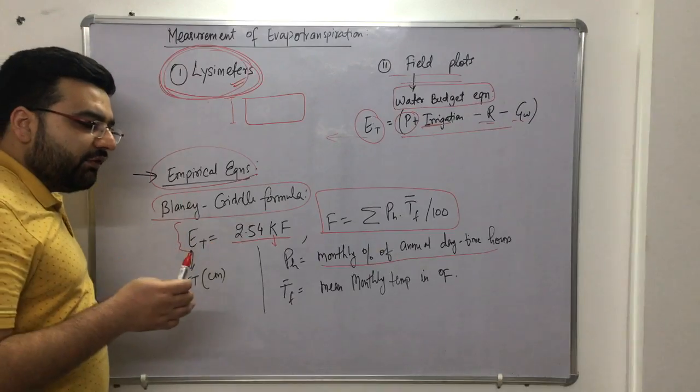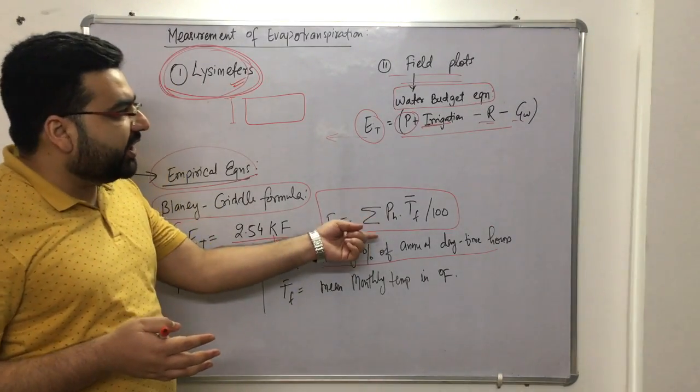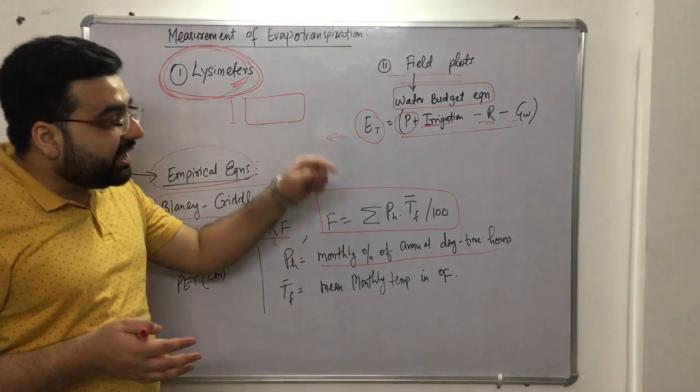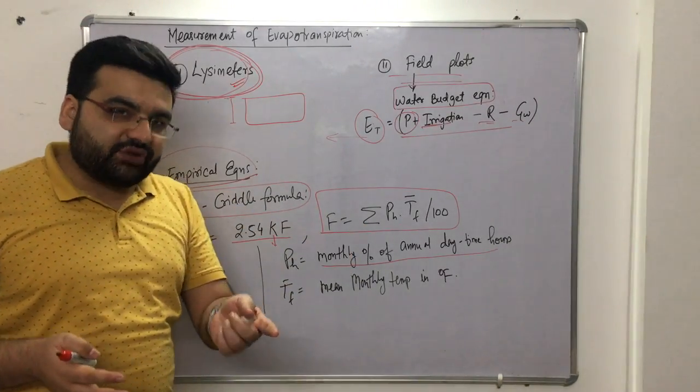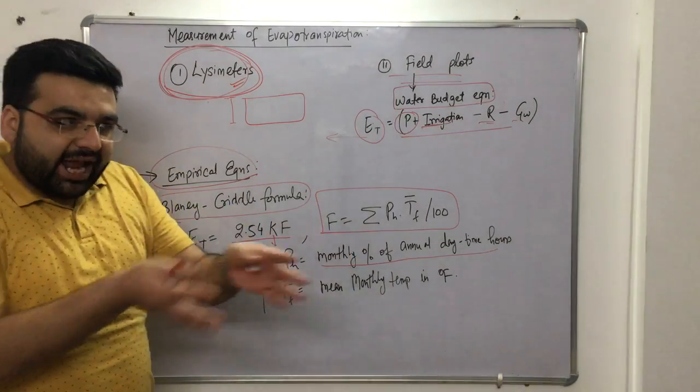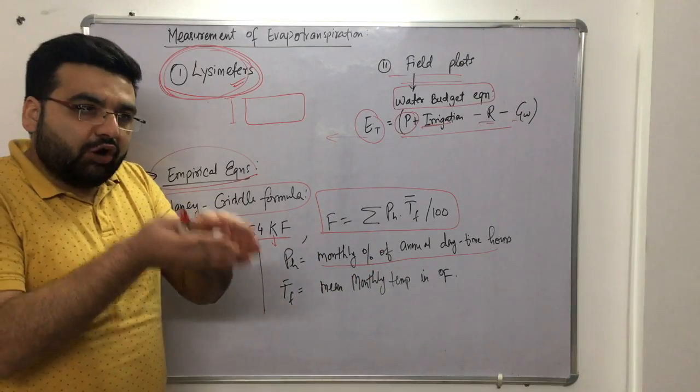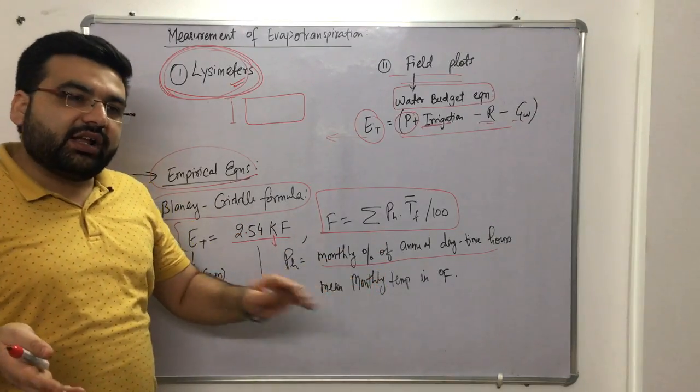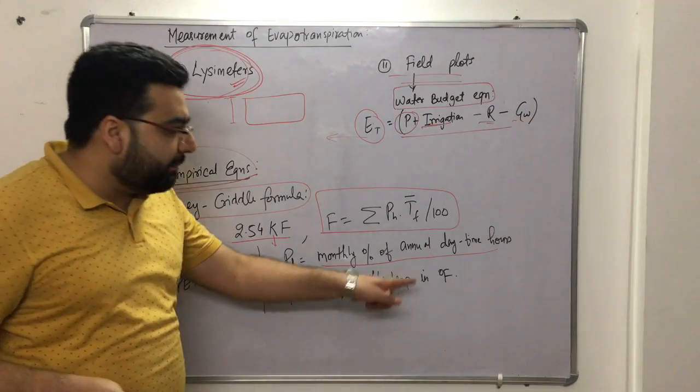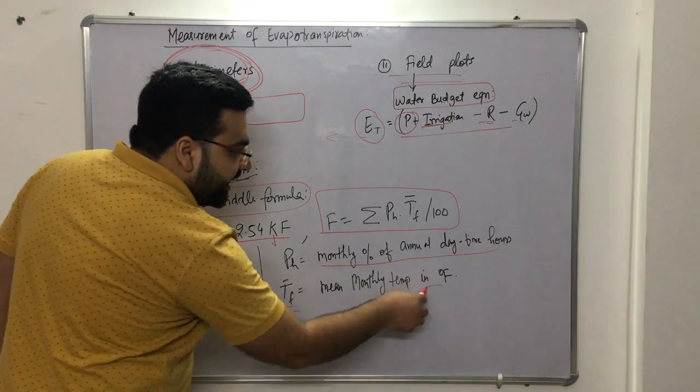You will be given how much daytime hours there are, and for one month you have to calculate the percentage of that. And Tf is the temperature in degrees Fahrenheit.